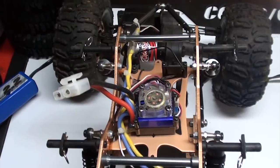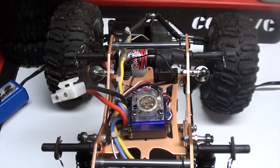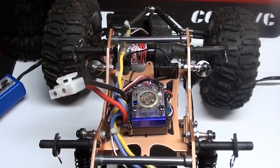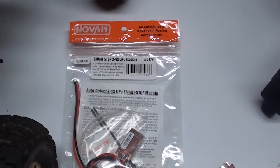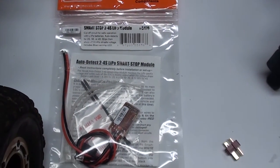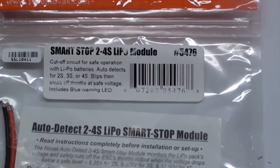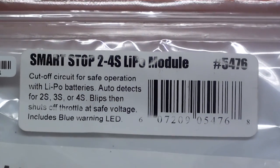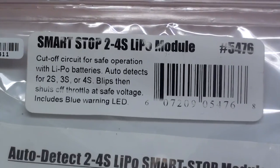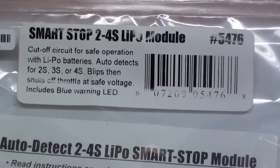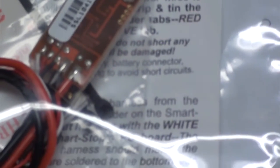So I'm going to get out my LiPo cutoff and we're going to get that thing soldered in place. So here is my Novak Smart Stop 2-4S cutoff. Cut off light circuit for safe operation with LiPo batteries. Auto detects for 2S, 3S, 4S. Bloops when shut off. Throttle at safe voltage includes a blue warning LED.